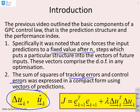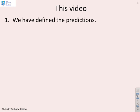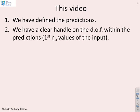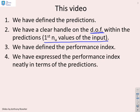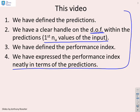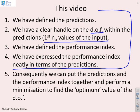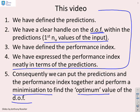We can write the performance index in this compact form. We've defined the predictions and have a clear handle on the degrees of freedom — the first NU values of the input. We've expressed the performance index neatly in terms of predictions. What we need to do now is put all this together and perform a minimisation to find the optimum value of the degrees of freedom, which basically optimises our performance index.